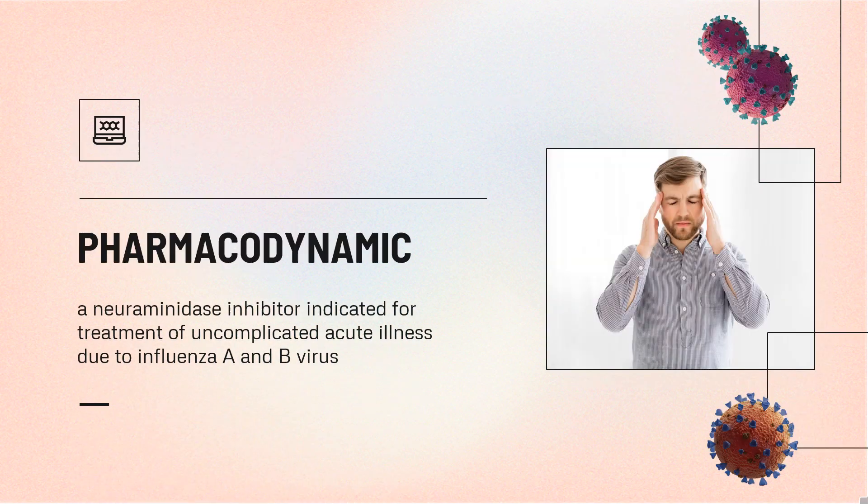Pharmacodynamics. Zanamivir, an antiviral agent, is a neuraminidase inhibitor indicated for treatment of uncomplicated acute illness due to influenza A and B virus in adults and pediatric patients 7 years and older who have been symptomatic for no more than 2 days. Zanamivir has also been shown to significantly inhibit the human sialidases NEU3 and NEU2 in the micromolar range, which could account for some of the rare side effects of Zanamivir.